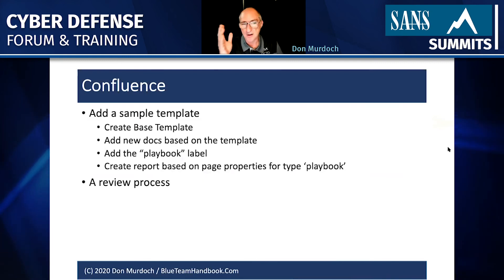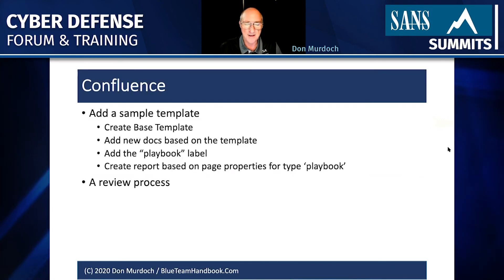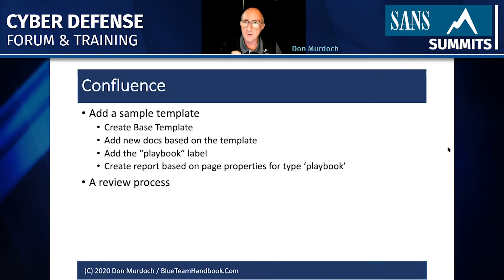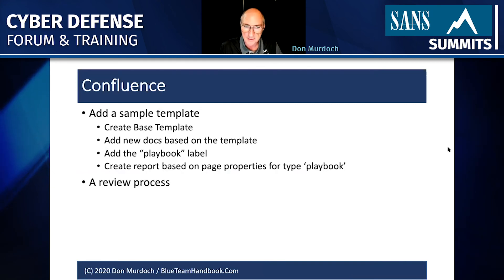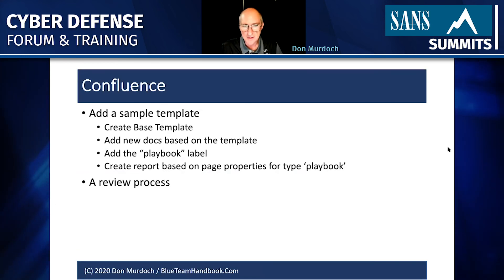As I close, I want to talk a little bit about Confluence and provide a couple of screenshots. In Confluence as a modern content management system, one of the nice things you can do is define a template that has all of the attributes you want. Confluence has a feature called Page Properties. When you create that base template, you can create a number of properties on it. You give playbooks a label to make sure the documents you create in Confluence are retrievable in your content management system.